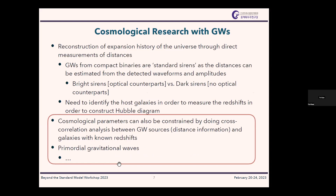What cosmological information can we get from gravitational waves? We can measure distances to objects, which is very important because the expansion history of the universe has been based on distance and redshift measurements. Gravitational waves from compact binaries are called 'standard sirens' — instead of standard candles used in optical astronomy — because distances can be estimated from the detected waveforms and amplitude.